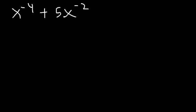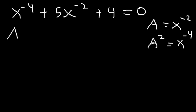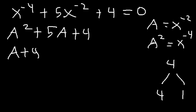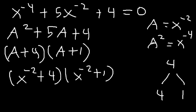Try this one: x to the negative 4 plus 5x to the negative 2 plus 4 equals 0. Using substitution: let a equal x to the negative 2, so a squared equals x to the negative 4. This is in quadratic form since one exponent is twice the other. We rewrite as a squared plus 5a plus 4. Two numbers that multiply to 4 and add to 5 are 4 and 1, giving a plus 4 times a plus 1. Replacing a with x to the negative 2: the answer is x to the negative 2 plus 4, times x to the negative 2 plus 1.